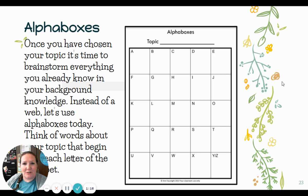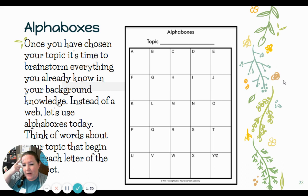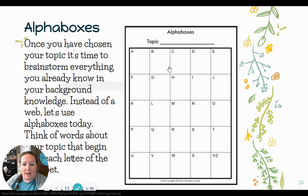We're going to use a different tool today. So far we've used brainstorming webs. Today I thought we would pull out some alpha boxes. Once you've chosen your topic, it's time to brainstorm everything you already know in your background knowledge. Instead of a web, we'll be using alpha boxes today — we'll think of words that begin with a letter all about our topic.